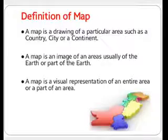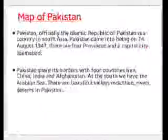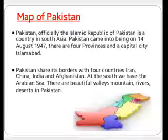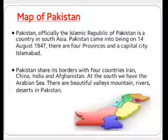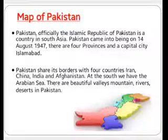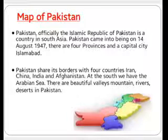Pakistan, officially the Islamic Republic of Pakistan, is a country in South Asia. Pakistan came into being on 14 August 1947. There are four provinces and the capital city of Islamabad. You can see the four provinces in this map.